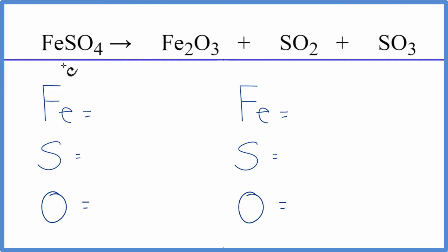So in this equation, we have iron 2 sulfate, and it's decomposing. It's breaking apart into these compounds. So if you heat this up enough, it'll break apart into Fe2O3 plus SO2 plus SO3.